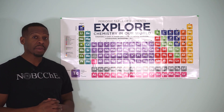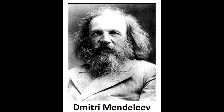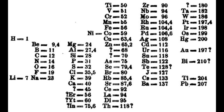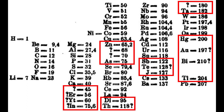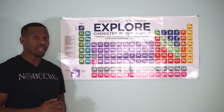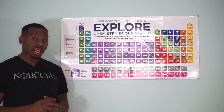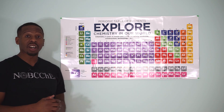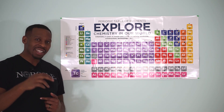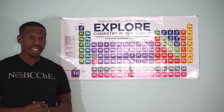It was Russian chemist Dmitri Mendeleev who is credited with devising the first version of the periodic table as we know it today. What was remarkable was that Mendeleev even left room on his periodic table for elements he predicted existed but were not yet known. In 2016, the common version of the periodic table was completed all the way out to element number 118.